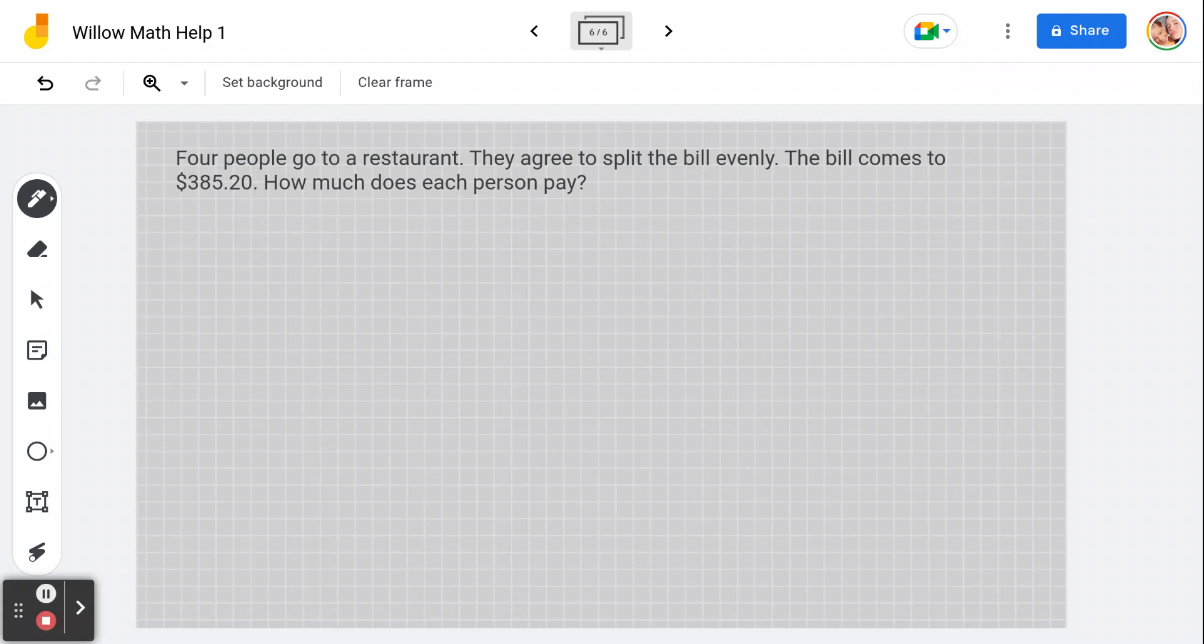Four people go to a restaurant. They agree to split the bill evenly. The bill comes to 385.20. How much does each person pay?